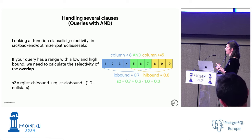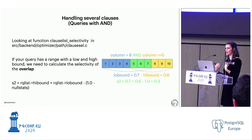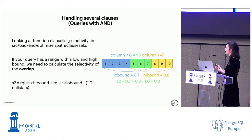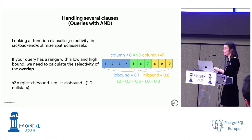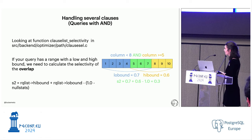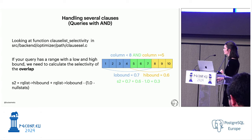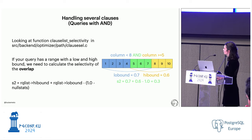Except that doesn't always work. You might have scalar operations on the same column — for example, column < 8 AND column >= 5. In that situation, you can't just multiply the selectivities, because what you want is the overlap of those two clauses. We know they're related. So we compute the selectivity of the low bound and the high bound separately, then calculate the overlap as: selectivity_high + selectivity_low - 1. With 0.7 and 0.6 you get an overlap of 0.3.